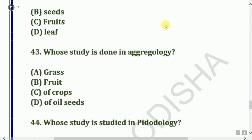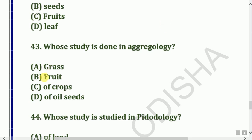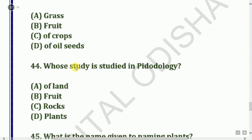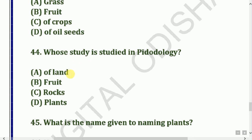Next question: Whose study is done in agriology? Options: Grass, fruit, crops, or oil. The answer is grass — agriology is the study of primitive cultures/grass.